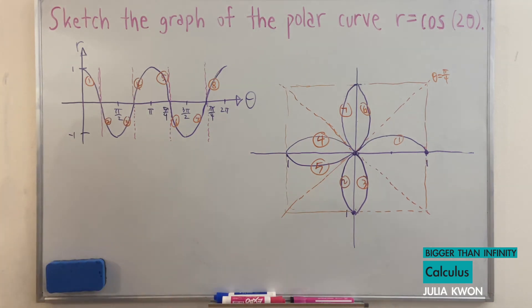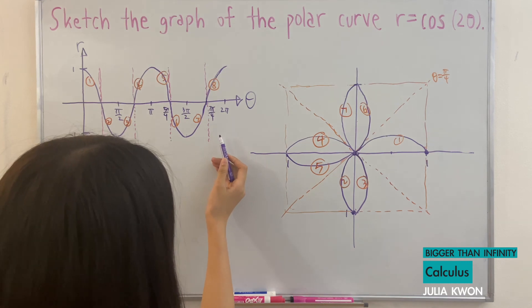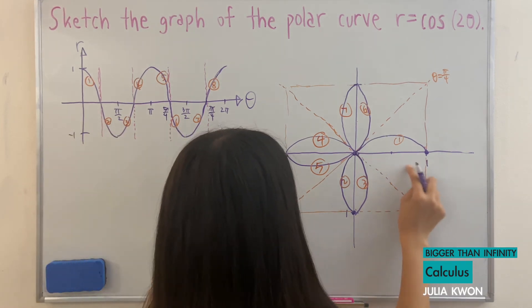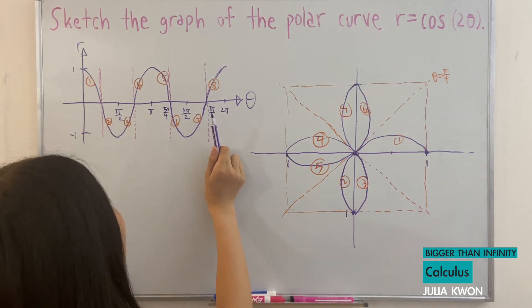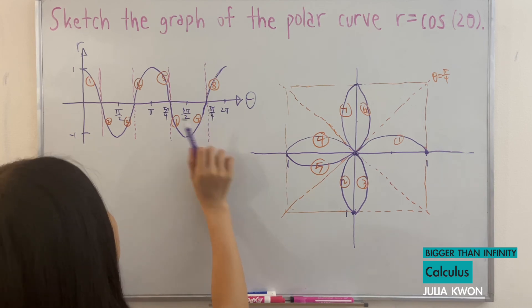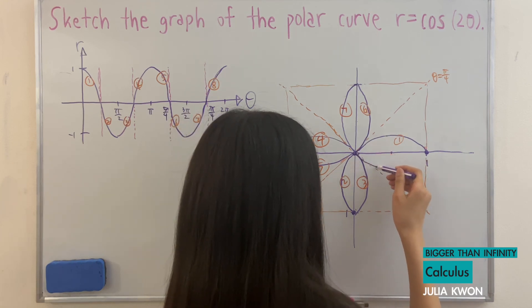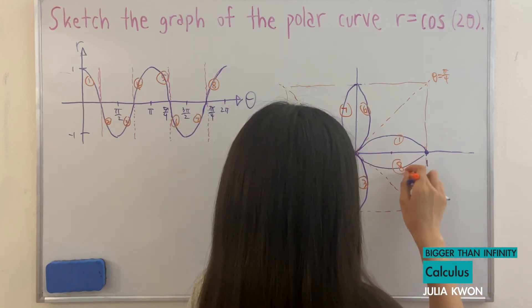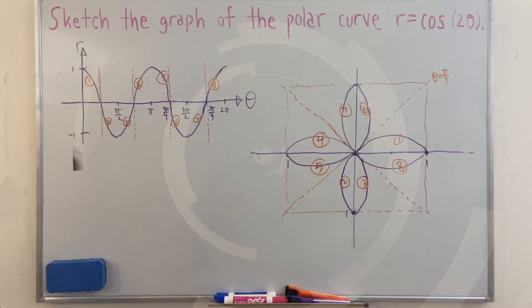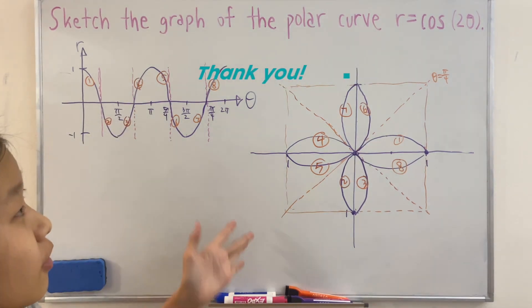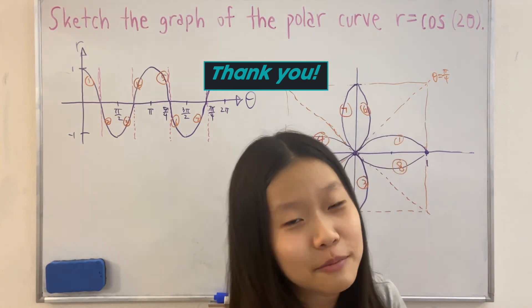For our final curve, the eighth curve, theta is equal to seven pi over four to two pi. As theta approaches two pi, our radius gets larger and approaches one. So that gives us our eighth curve. This is what our polar curve r is equal to cosine 2 theta looks like. That would be the end of this video — thank you for watching everyone, please subscribe.